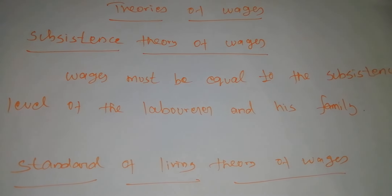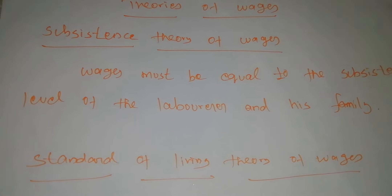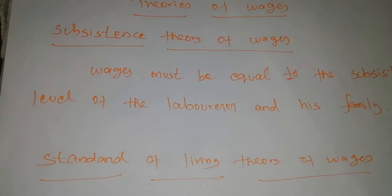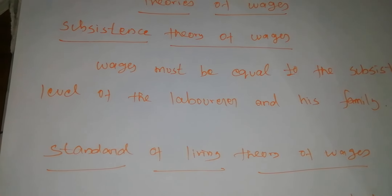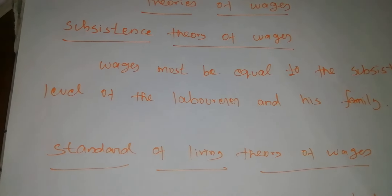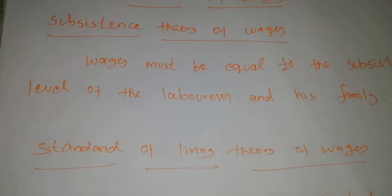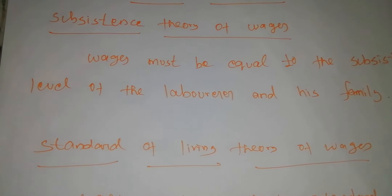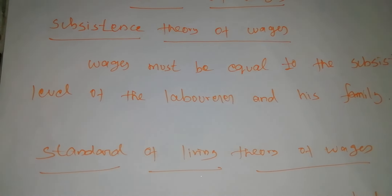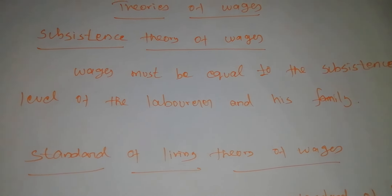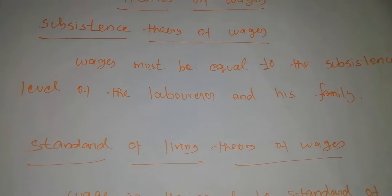According to this theory, wages must be equal to the subsistence level of the laborer and his family. Subsistence means the minimum amount of food, clothing, and shelter which workers and their families require for existence. Using this wage, the laborer can only afford food, clothes, and shelter — nothing extra. If workers are paid higher wages than the subsistence level, workers would have larger families, population would increase, the supply of labor would rise, and wages would come back down.